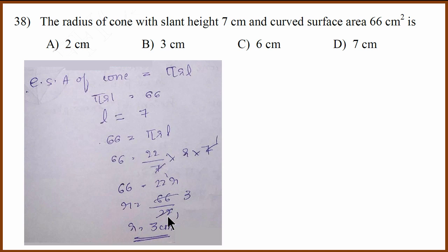38th question. We need to find the radius and the slant height is given. So using formula pi r l and substituting, we get 3 centimeter as the answer.